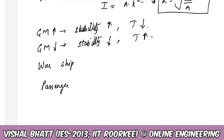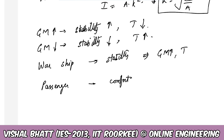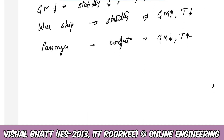For warships, stability is more significant than comfort, whereas for passenger ships, comfort conditions are more required. Therefore, for warships, GM value is kept high even if the time period is low. For passenger ships, GM is kept as low as possible while remaining positive to maintain stability, and a higher time period provides better comfort.